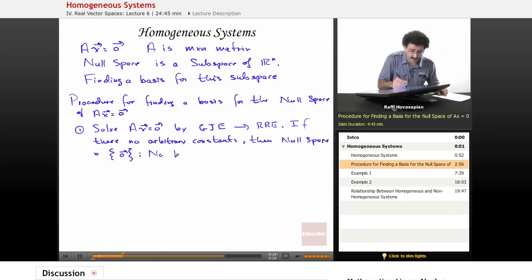then the null space equals the set zero vector. What that means is that there is no basis for the null space. There is no null space essentially. Well, there is. It's a zero vector, but there is no basis for it.